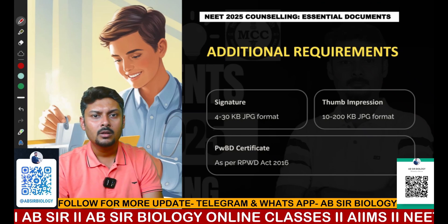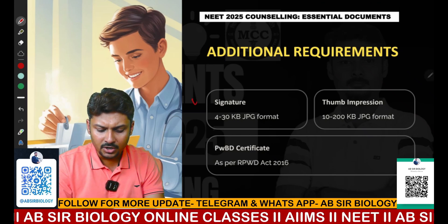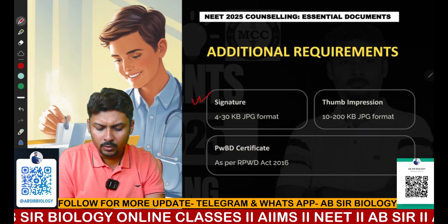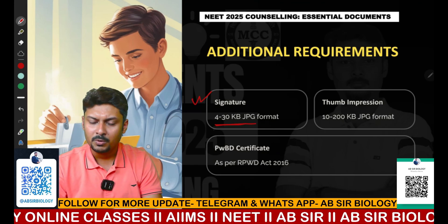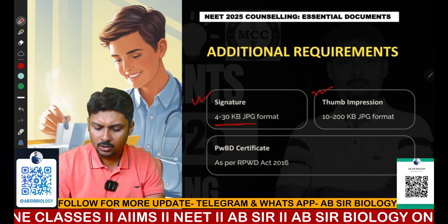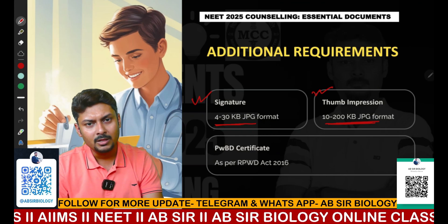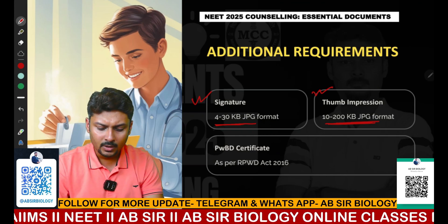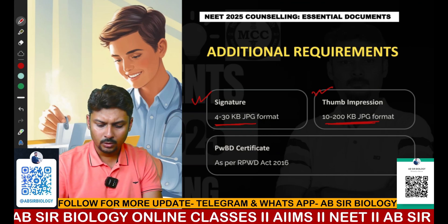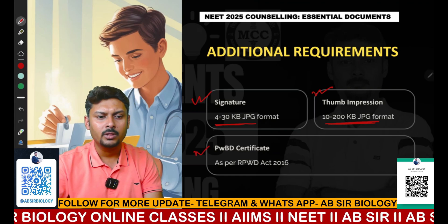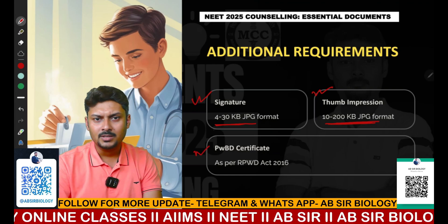As you can see on the screen, some additional documents are required: your signature, which should be between 4 to 30 KB in JPG format; your thumb impression, which should be between 10 to 200 KB in JPG format; and if you have a physical handicap certificate, that document will also be required during the counselling.